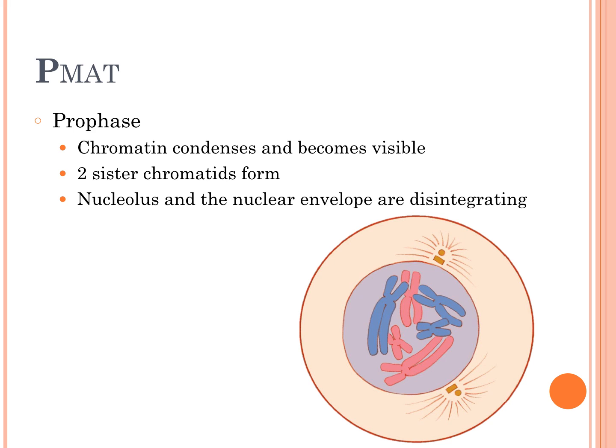Let's go into PMAT. You need to know what each phase looks like and what happens in it. First is prophase: the chromatin condenses and becomes visible. The DNA has replicated and formed into chromosomes so it can be easily separated. The two sister chromatids form — each half of the X-shaped chromosome. The nucleolus and nuclear envelope are disintegrating, because the nucleus has to dissolve in order for those chromosomes to separate.